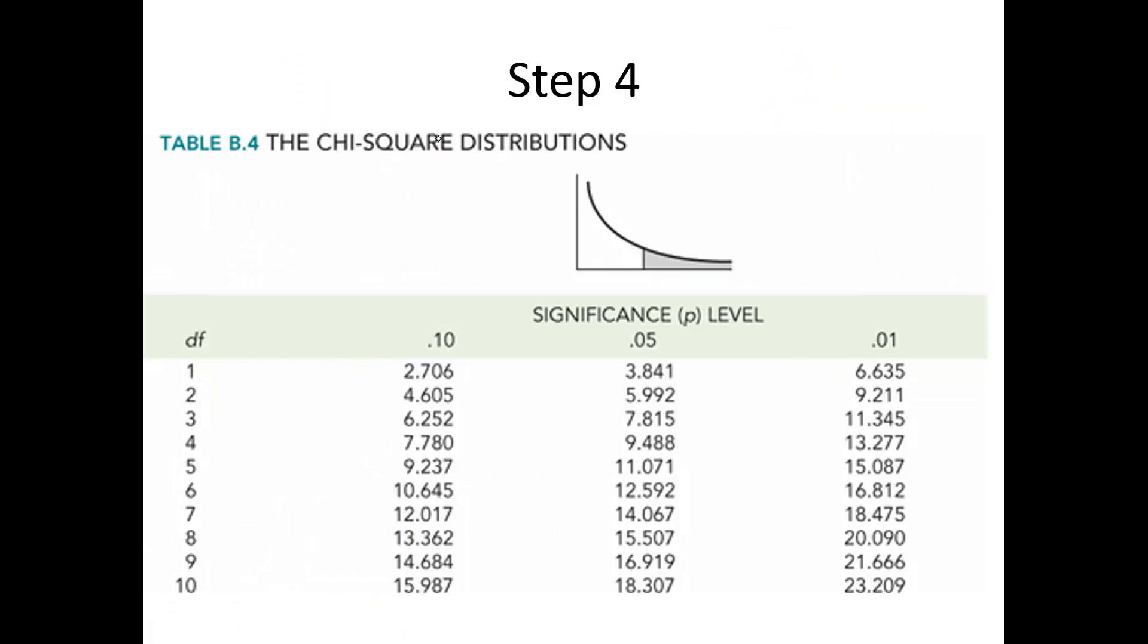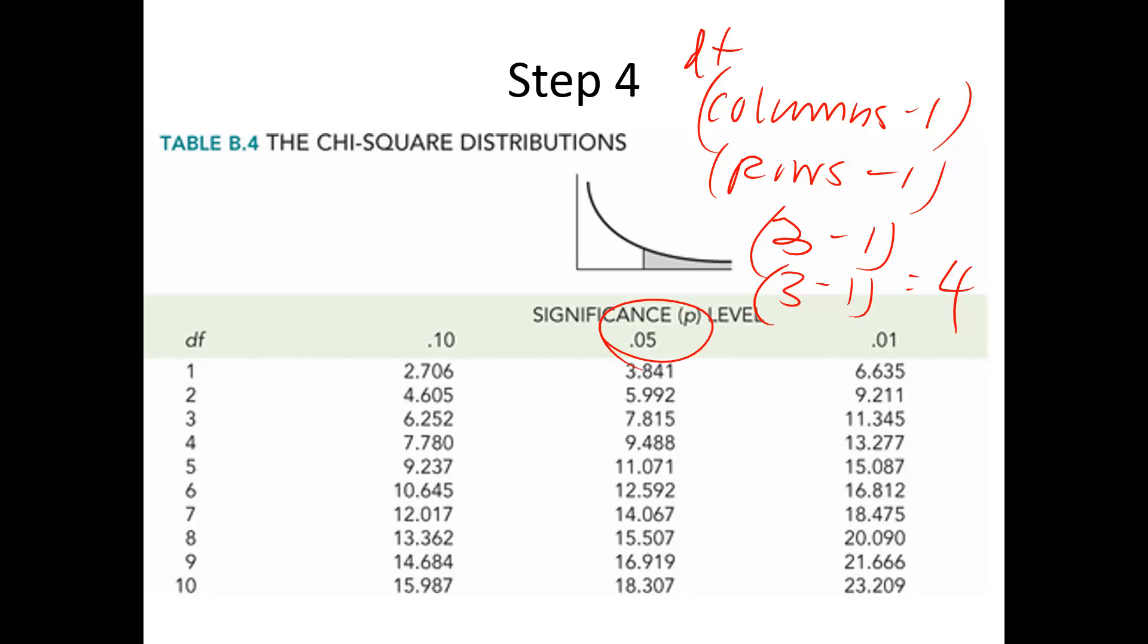So for step four, we're going to talk about degrees of freedom. It's columns minus one times rows minus one. So that's three minus one times three minus one, so that's four, getting math on this one. So degrees of freedom for four, 0.05 is 9.488.